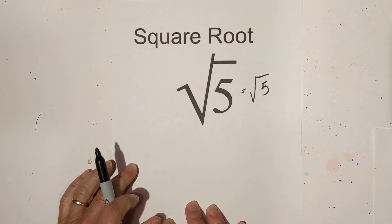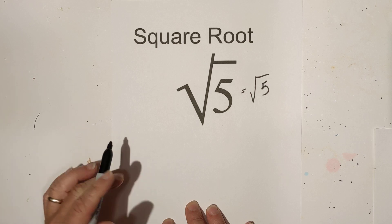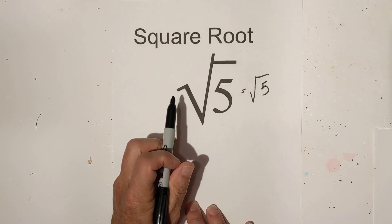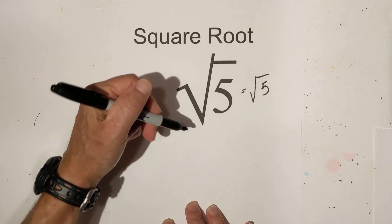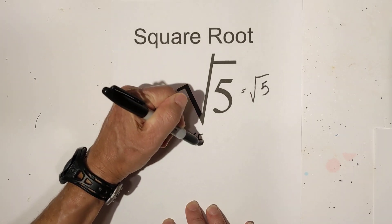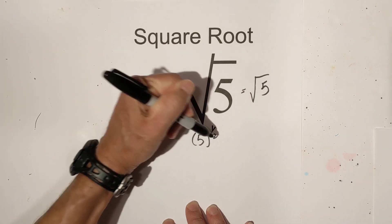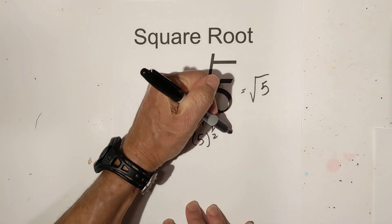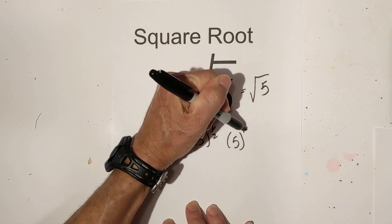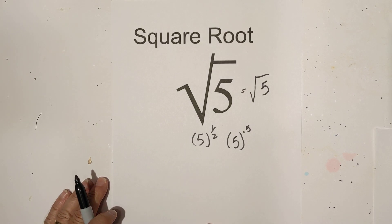Now you can get it in decimal form, but let me back up just a little bit. This is called the radical form, written like this. Sometimes you may see it in exponential form, and it would be 5^(1/2) or possibly 5^.5, but most of the time you see it in this radical form.